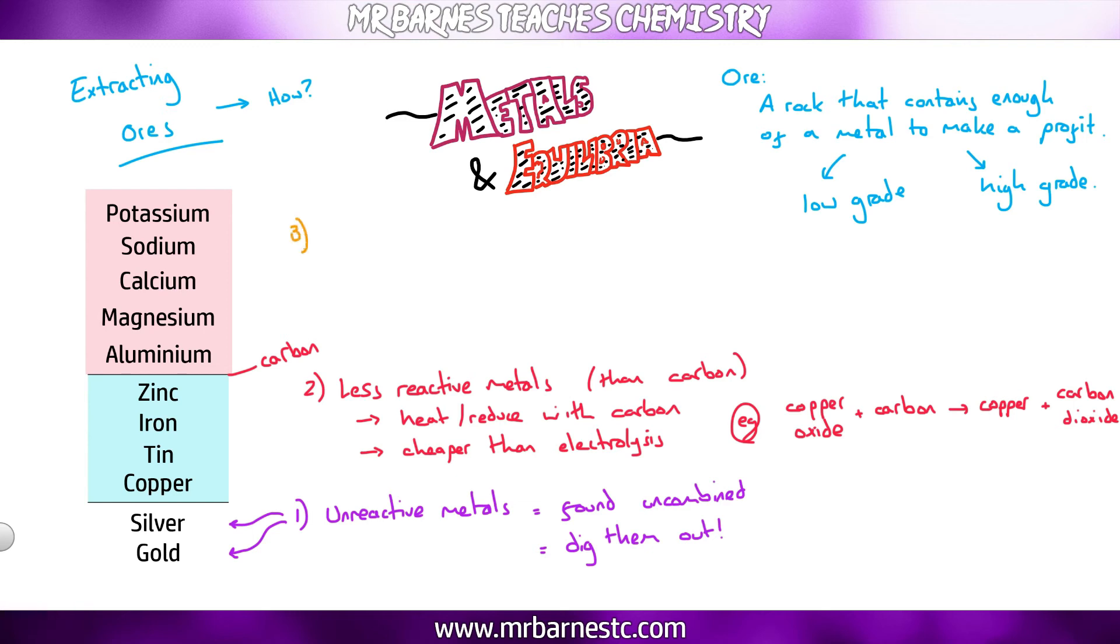Third way of extracting then, that is for your more reactive metals, the ones that are more reactive than carbon. For these ones you have to use electrolysis. You can't heat with carbon. The reason for that is, you put it in potassium, sodium—they're more reactive than carbon therefore they will not be displaced by the carbon.